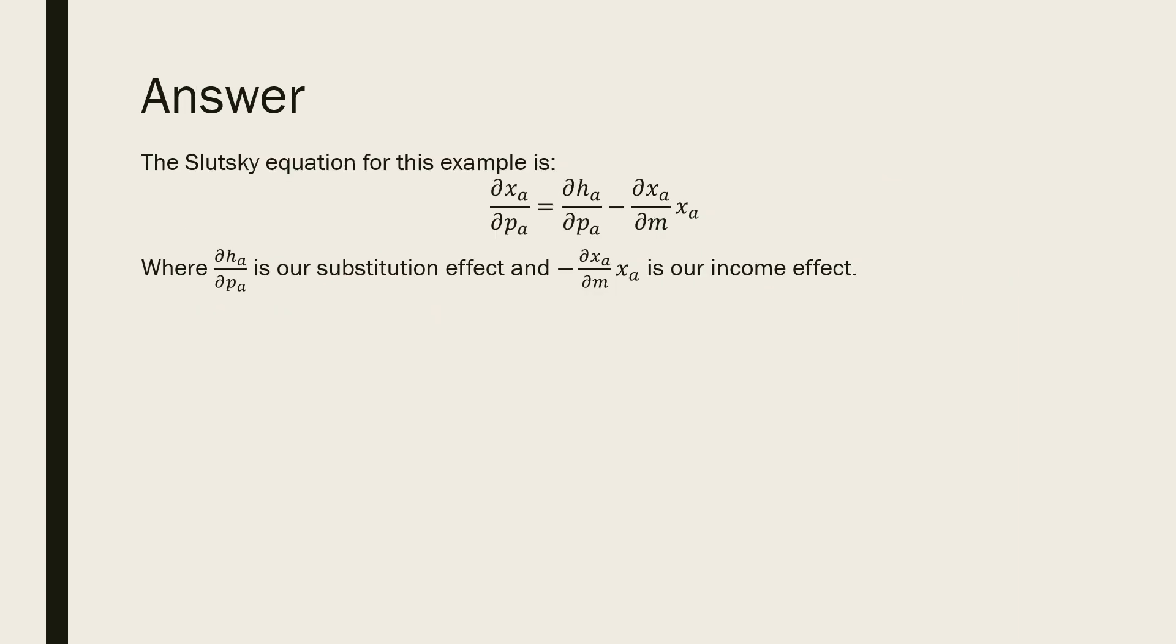So the Slutsky equation for this example is the following, where the partial derivative of our Hicksian demand for apples with respect to the price of apples is our substitution effect, and the negative partial derivative of our Marshallian demand for apples with respect to income times our original Marshallian demand for apples is our income effect.